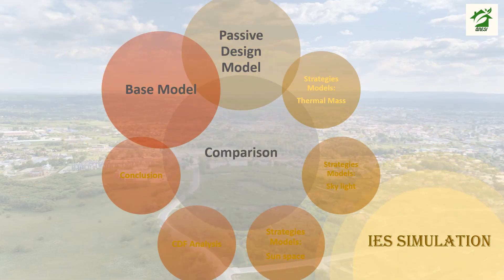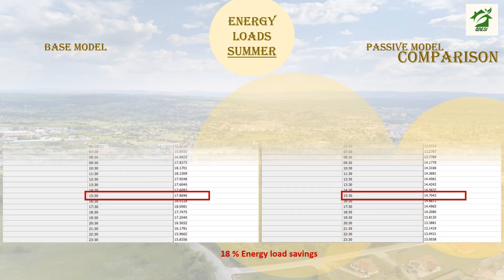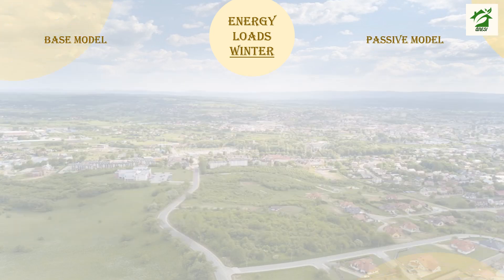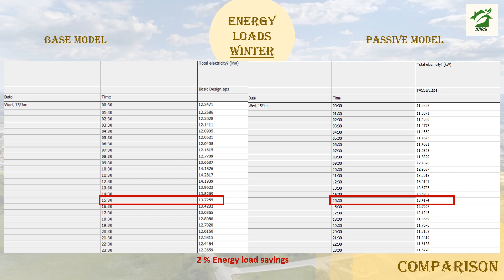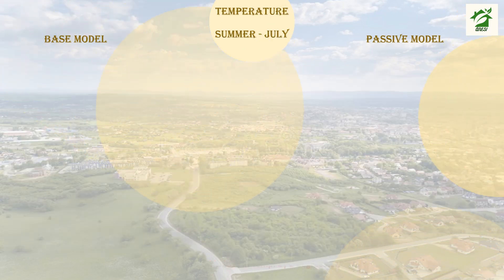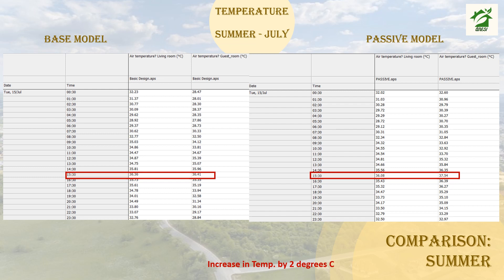Comparing the PACE model and the passive design model, the passive model achieved 18% energy load savings in summer, 2% savings in winter, and 11% savings in spring. These enhancements were achieved by changing the orientation and materials. The passive model has higher temperatures than the PACE model in summer, mostly in the morning and at night, due to the south-facing orientation and high thermal mass envelope components which store heat inside the building. This comparison was done in summer July between the PACE model and passive model.